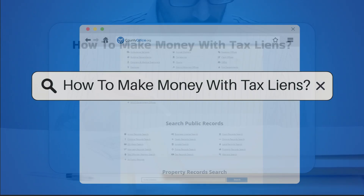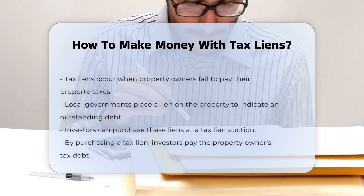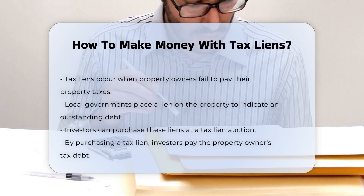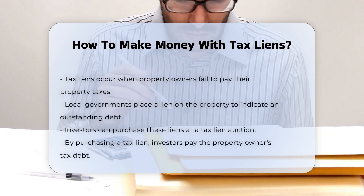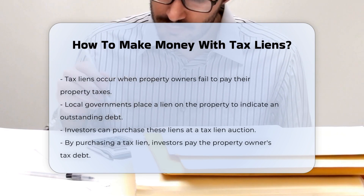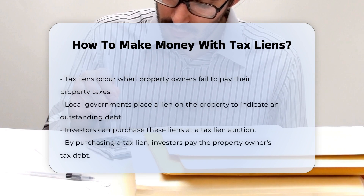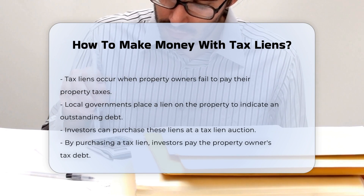Tax liens arise when property owners fail to pay their property taxes. Local governments place a lien on the property, indicating an outstanding debt owed to the government.